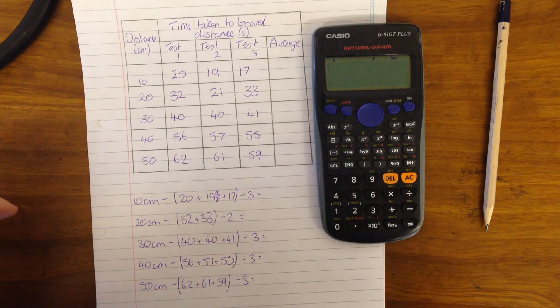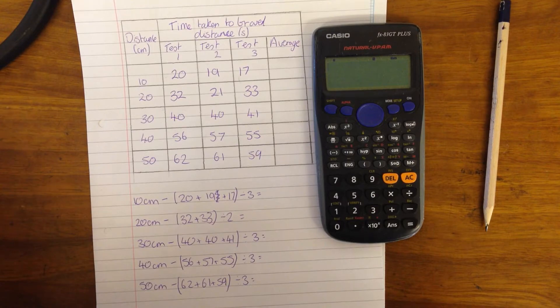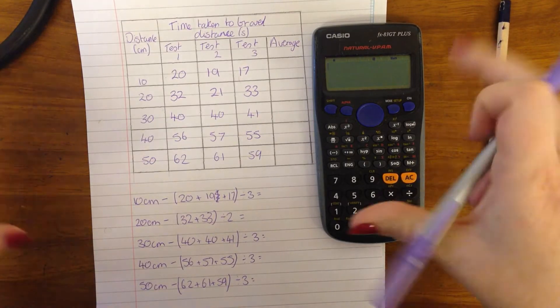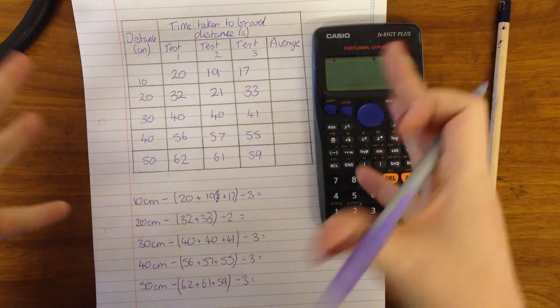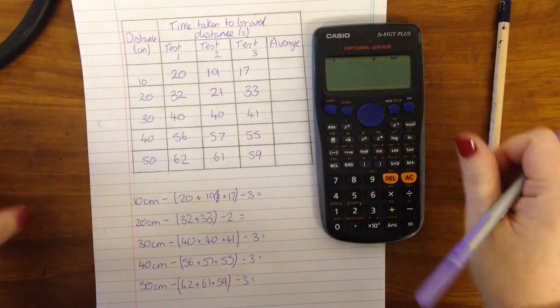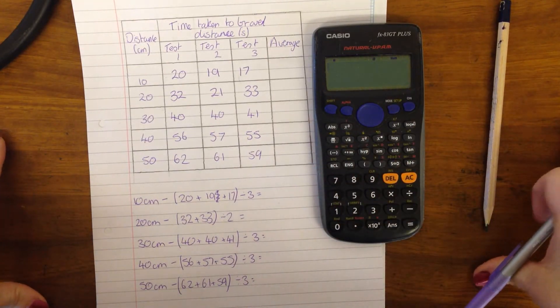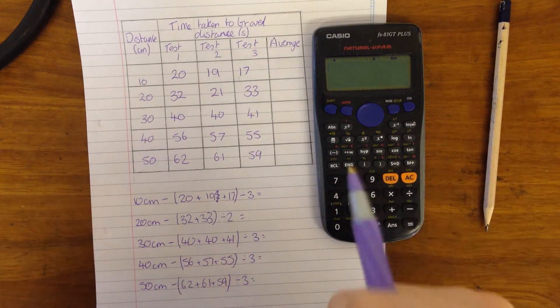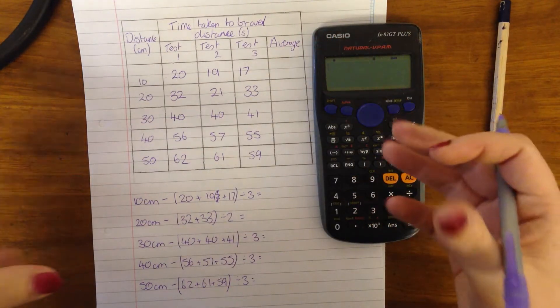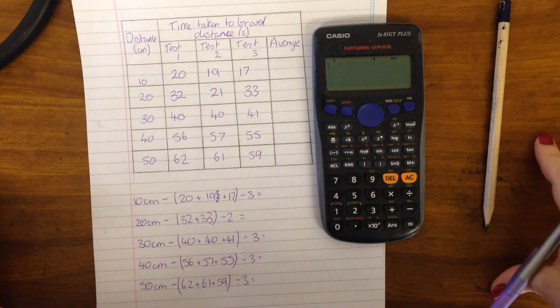Hello and welcome to this video in preparation for your ISA. This is all about how to work out averages. So this is a hand-drawn table with some results of the experiment that I showed you last time where Primrose had to run and catch some cat treats from where I threw them from.